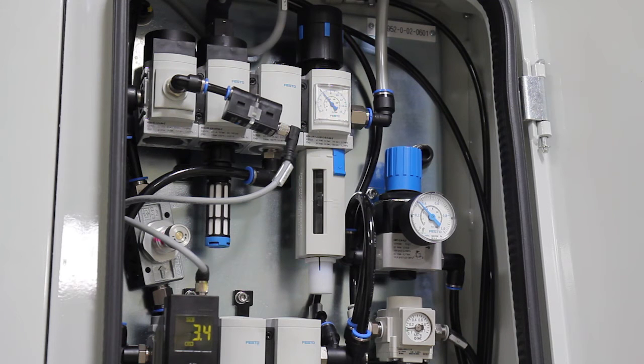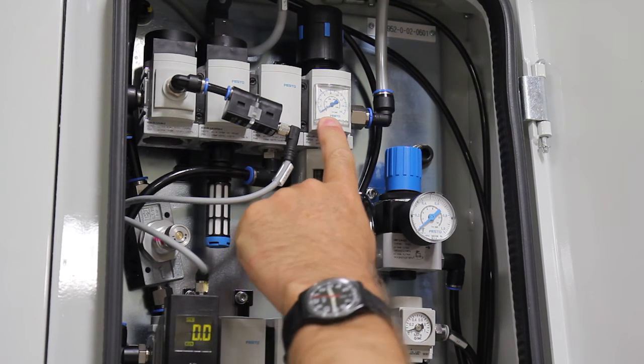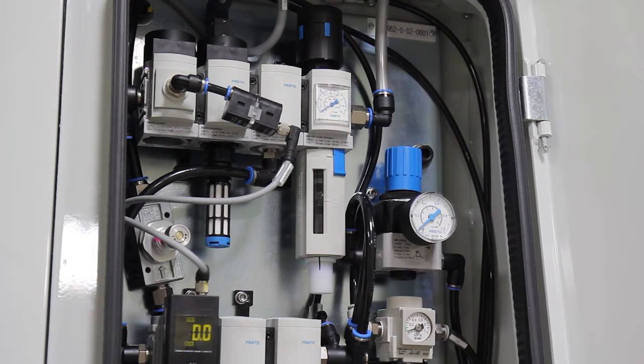To replace the filter elements, first remove the compressed air from the machine. The easiest way to do this is to simply turn the main shutoff valve which is located at the air inlet point on the machine. You can see when the gauge reads zero, there is now no pressure inside the system, so it's safe to remove the filter bowl.